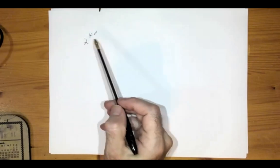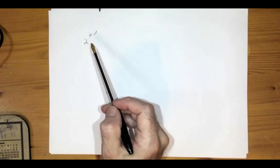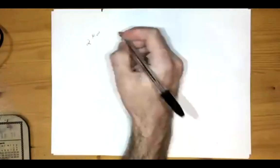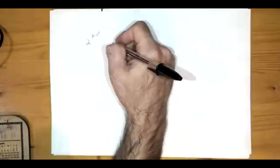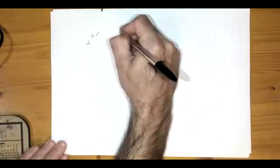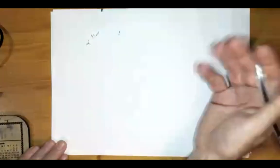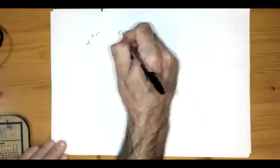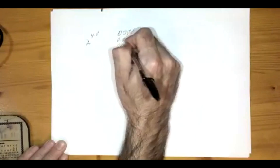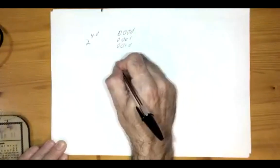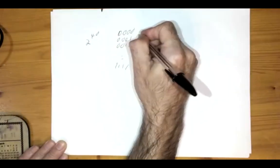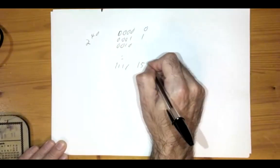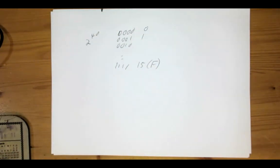For four bits, you can represent how many different addresses? Four bits allow you to go from 0000, 0001, 0010, and so on up to 1111 — so you could use four bits to represent addresses 0 through 15, or F in hexadecimal.